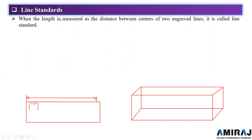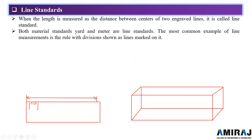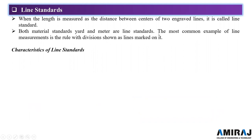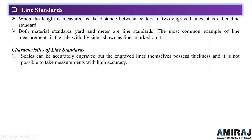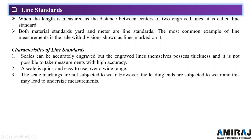When the length is measured as the distance between the centers of two engraved lines, it is called a line standard. Both the material standard yard and meter are line standards. The most common example is a ruler with divisions shown as lines. The scale can be accurately engraved, but the engraved lines themselves possess thickness, making high accuracy difficult. Scale markings are not subject to wear, but the leading edge is subject to wear, which may lead to undersized measurements.